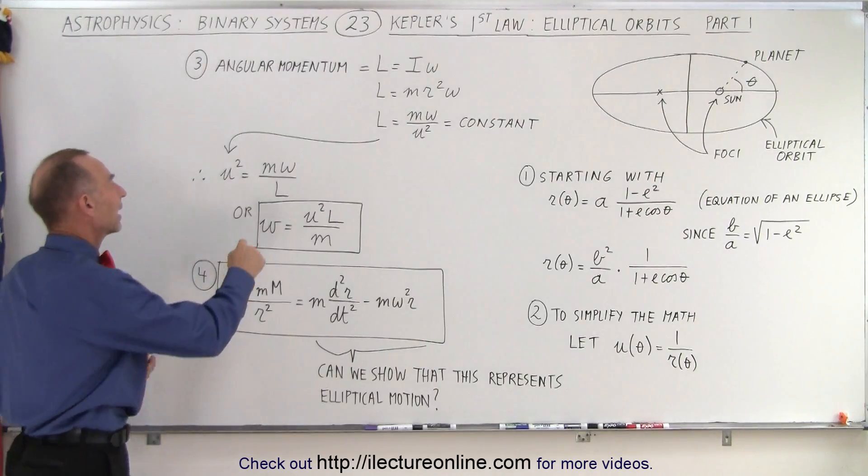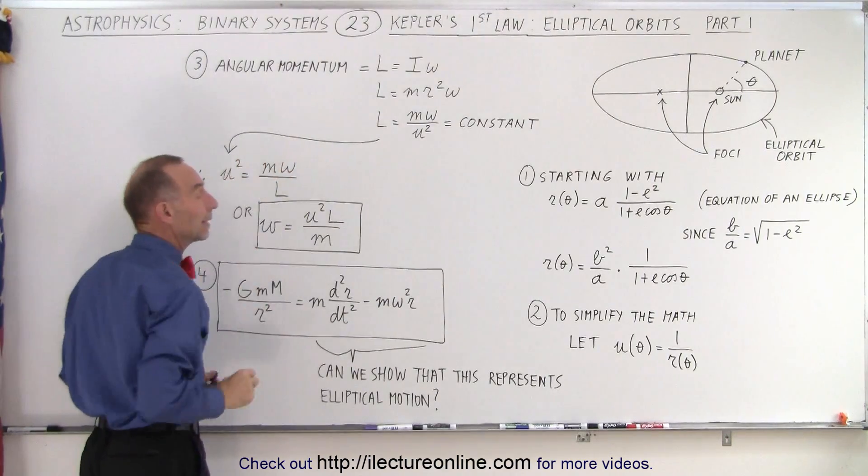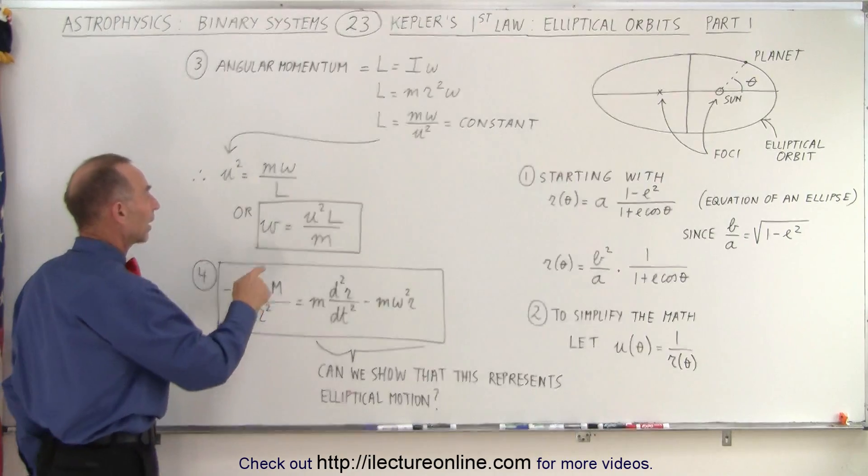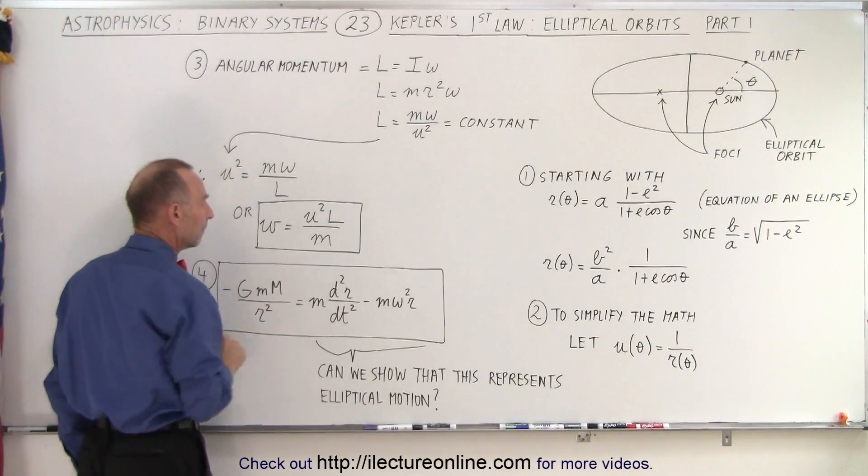If we solve for U squared, U squared equals M omega over L. This will be a handy replacement we can use later. We can also write omega, the angular velocity, as U squared L over M.